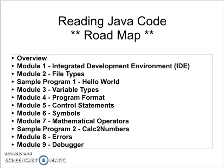Module 6 covers the various symbols that are used within a Java program — whether it's a comma, a semicolon, a period, a bracket, braces, or quotation marks. We will discuss those.